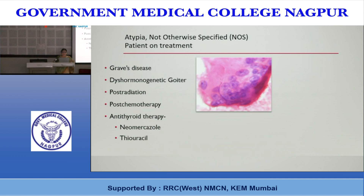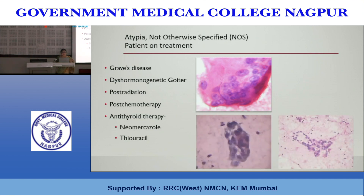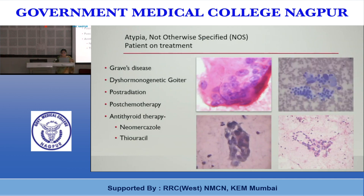In one picture, very large cells with prominent nucleoli are seen, but this pattern of nuclear atypia does not raise concern for papillary carcinoma and is best classified as NOS. The patient had a history of radioactive iodine treatment. Another patient treated with neomercazole for three years showed marked atypia in the form of nuclear enlargement and hyperchromasia. Always interpret such marked focal atypia in the light of clinical history and proceed to a repeat aspirate.